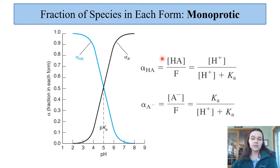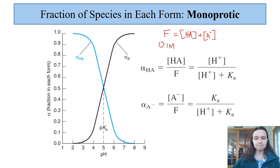The fraction of HA is equal to the concentration of HA divided by the formal concentration. Remember that the formal concentration is going to be the concentration before everything dissociates, and so that is equal to the concentration of HA plus the concentration of A-, because those are the two species that have been formed in equilibrium.